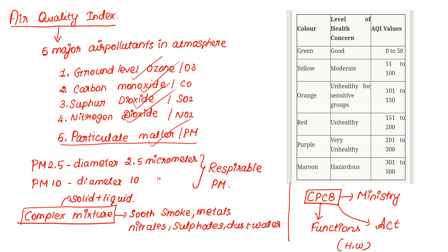PM2.5 and PM10 are solid and liquid particulate matter. Components include soot, smoke, metals, nitrates, sulfates, dust, and water. These are respirable particles that enter our lungs.